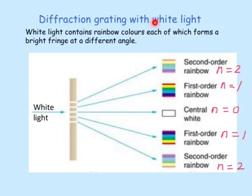Diffraction grating with white light. In other words, instead of using monochromatic light, we use white light, which consists of seven colors, seven rainbow colors. White light contains rainbow colors, each of which forms a bright fringe at a different angle.